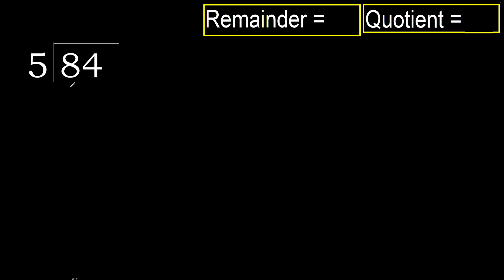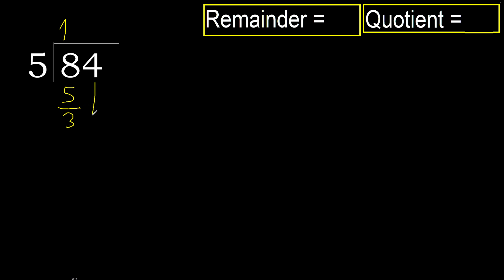84 divided by 5. Starting with 8: 5 multiplied by which number is nearest to 8 but not greater? 5 multiplied by 2 is 10 — that is greater. 5 multiplied by 1 is 5 — not greater. So we use 1. Subtract: 8 minus 5 equals 3, remainder 3.